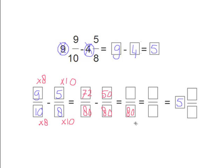Now we just have to subtract 72 minus 50, which equals 22. But 22 over 80 can be reduced even further. Let's divide both by 2. 22 divided by 2 is 11 and 80 divided by 2 is 40. So our total answer is 5 and 11 fortieths.